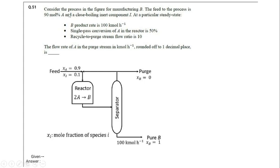The question is: consider the process in the figure for manufacturing B. The feed to the process is 90 mole percent A and the rest is inert. This is the mole fraction of A and inert in the fresh feed.